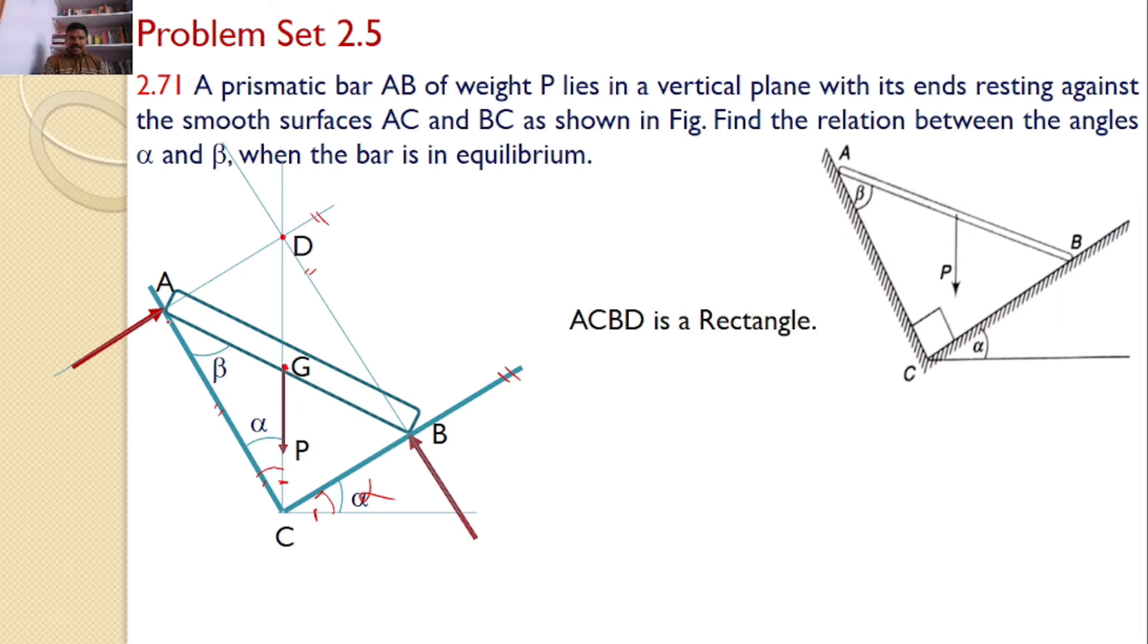Now, as we already explained, ACBD is a rectangle, and AB equals DC because both are the diagonals. We can also see that AG equals GB. What is the reason here? G is the centroid. The weight is acting from G.